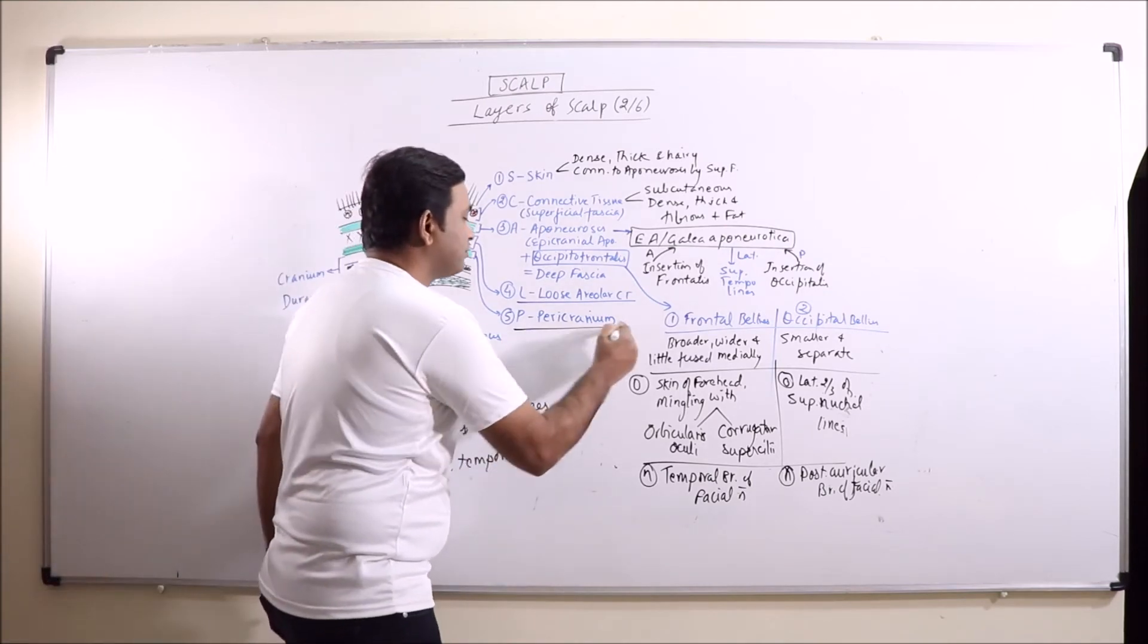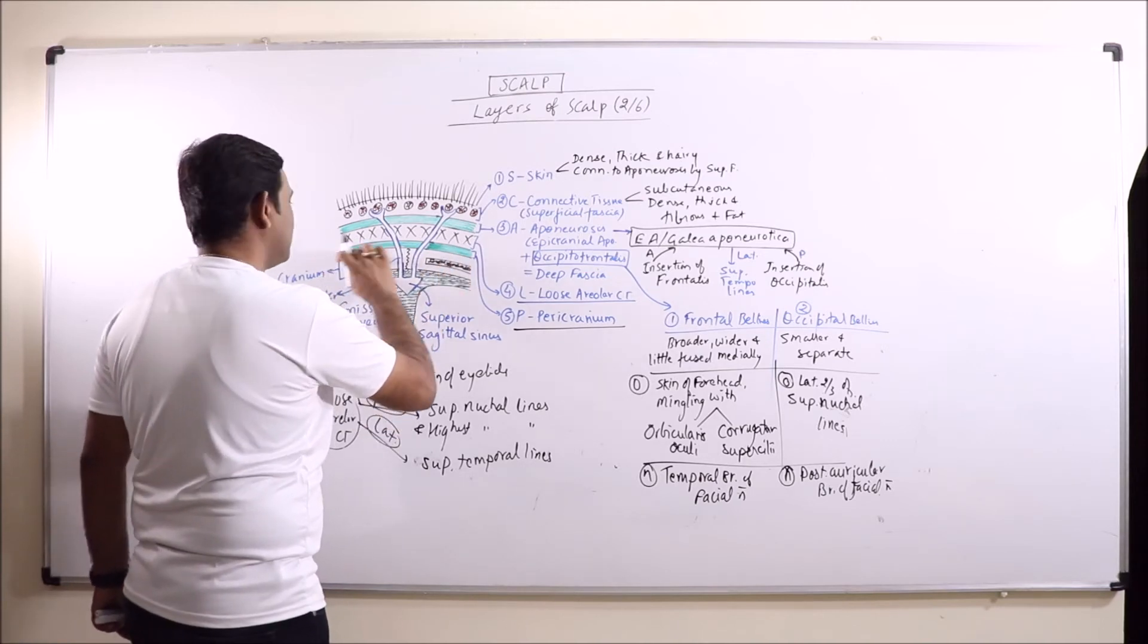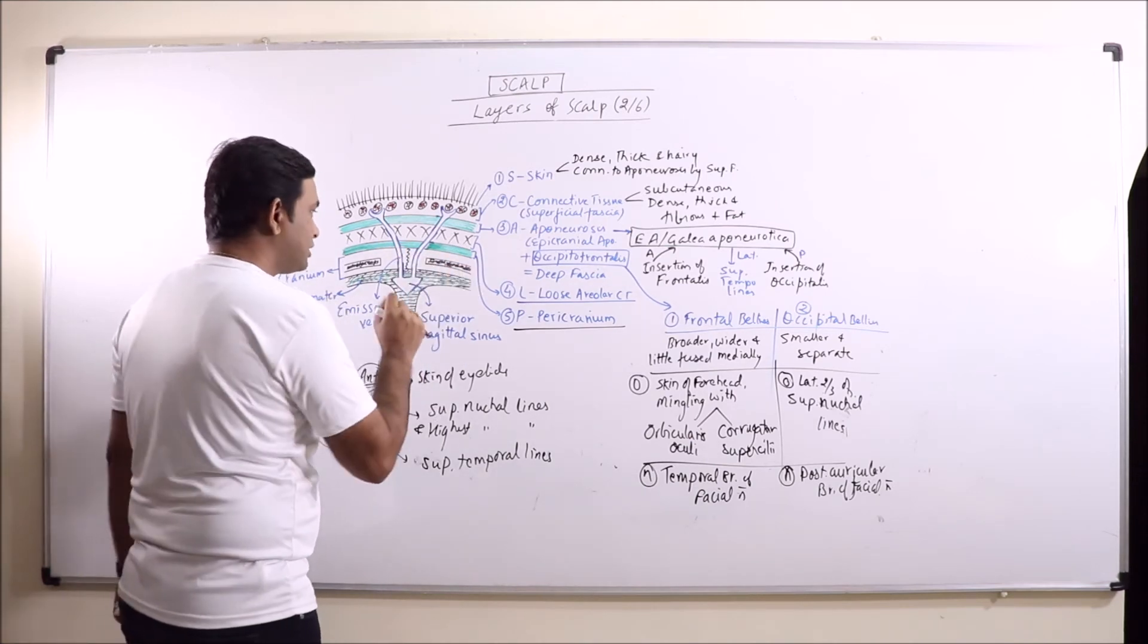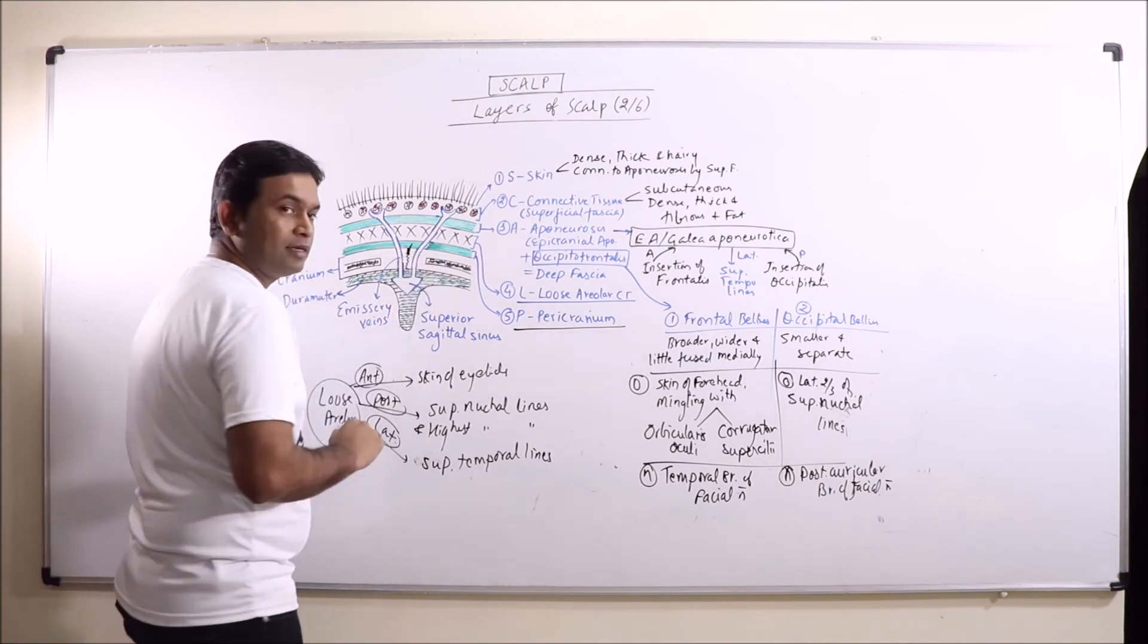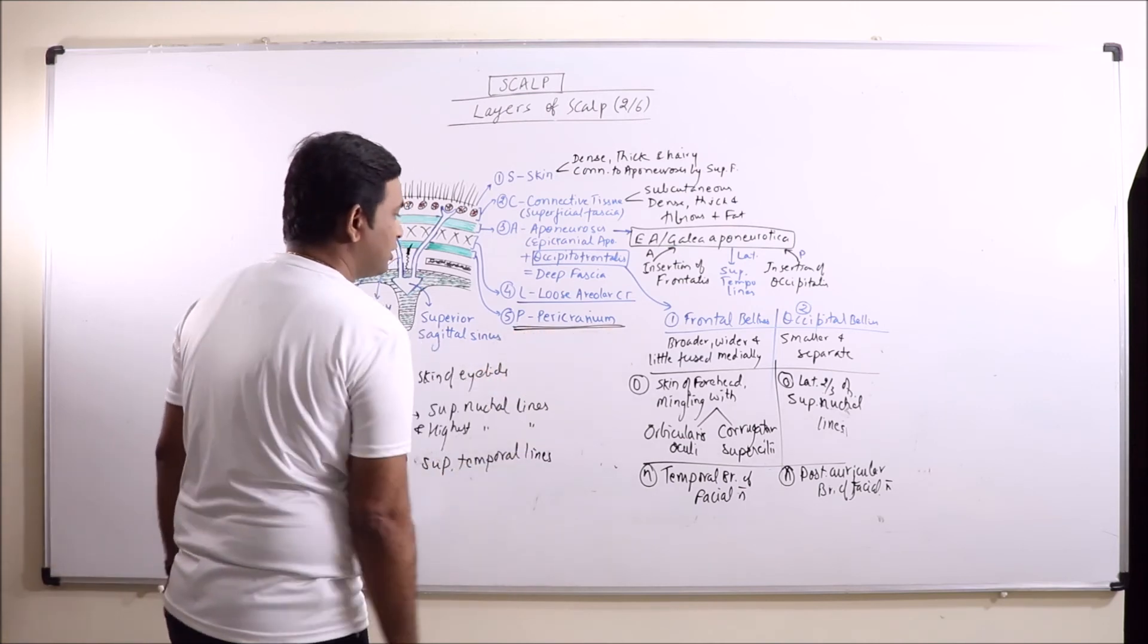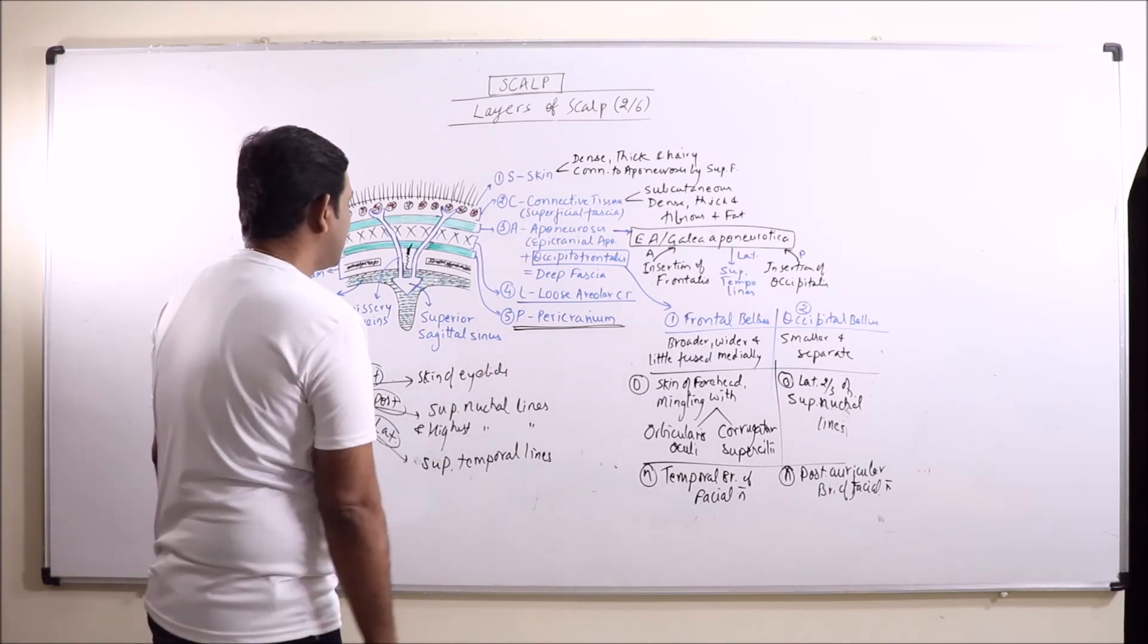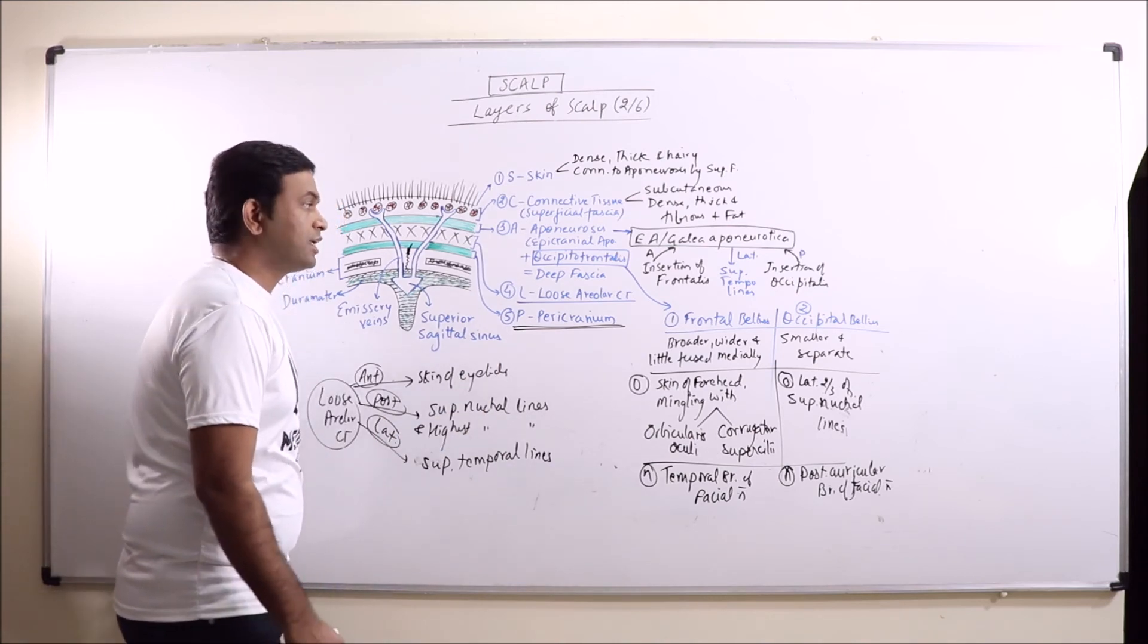And the last one is pericranium. We observe this, this is pericranium and this is the cranial bone. So pericranium is basically loosely adhered with the underlying cranial bone. But it is important that it is having firm adherence at the sutures with the help of sutural ligaments. So this is pericranium and it is having the blood supply and it is having the osteoblasts. So it also gives a chance of regenerational repair. So these are the five layers of scalp.